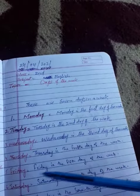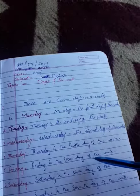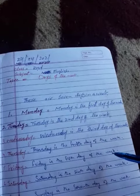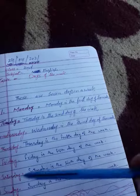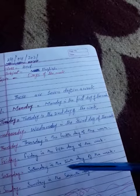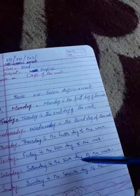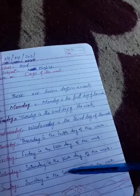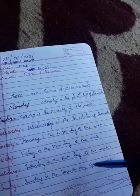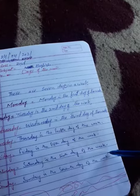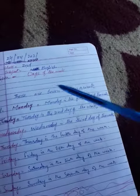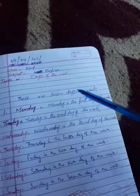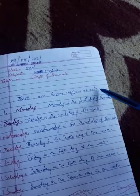Thursday is the fourth day of the week. Friday is the fifth day of the week. Saturday is the sixth day of the week. Sunday is the seventh day of the week. There are seven days in a week.